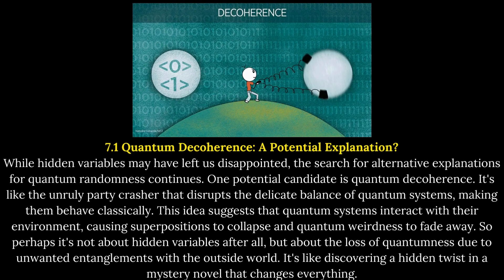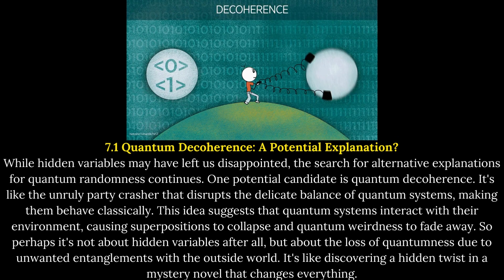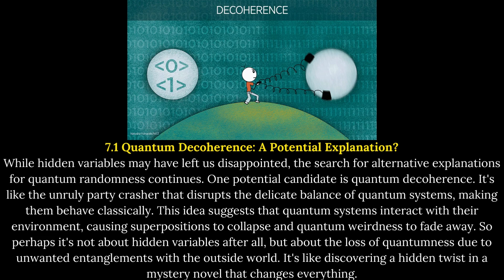While hidden variables may have left us disappointed, the search for alternative explanations for quantum randomness continues. One potential candidate is quantum decoherence — like the unruly party crasher that disrupts the delicate balance of quantum systems, making them behave classically. This idea suggests that quantum systems interact with their environment, causing superpositions to collapse and quantum weirdness to fade away. So perhaps it's not about hidden variables after all, but about the loss of quantumness due to unwanted entanglements with the outside world. It's like discovering a hidden twist in a mystery novel that changes everything.